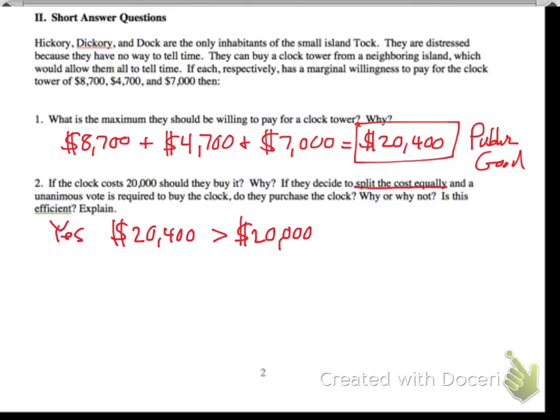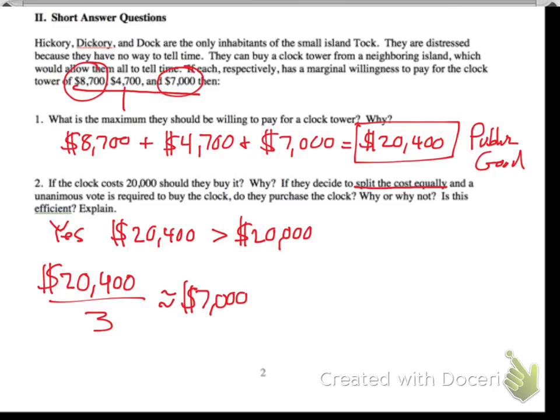So if they decide to split the cost equally, what we'd want to do is take that total cost here, or that maximum cost that they'd want to pay, and divide it by three. It should be approximately—I'm just going to round it to $7,000 for each person. So again, would they pay for it, why or why not? Well, this is their individual willingness to pay up here. This is above $7,000, this is $7,000, but notice how Dickory here doesn't want to pay any more than $4,700. Therefore, they would not buy the clock, because Dickory would not pay it. So no, Dickory wouldn't pay because his marginal willingness is $4,700, and he will not pay anywhere near $7,000. So that pretty much covers that.